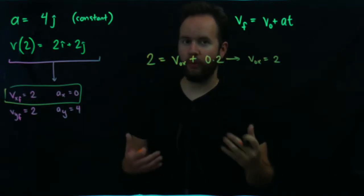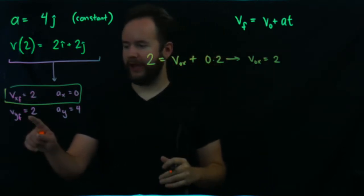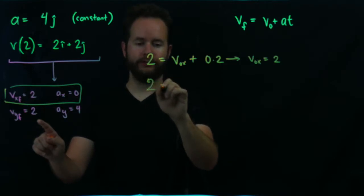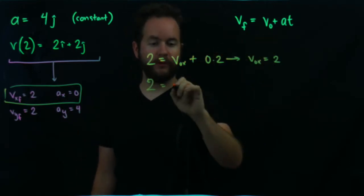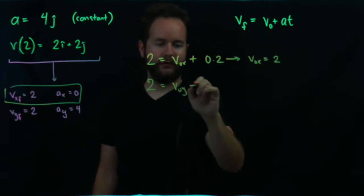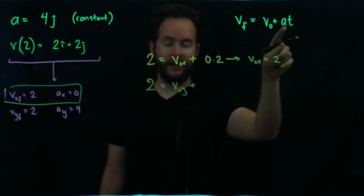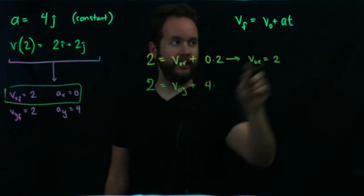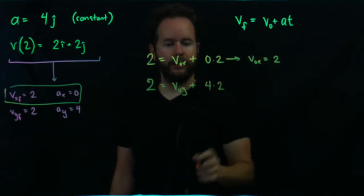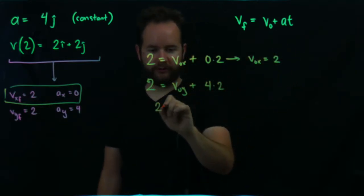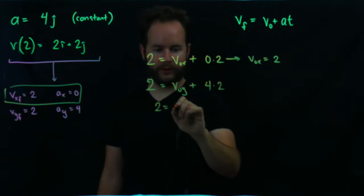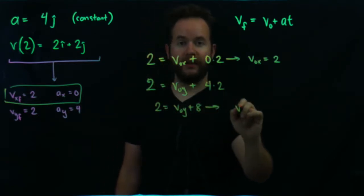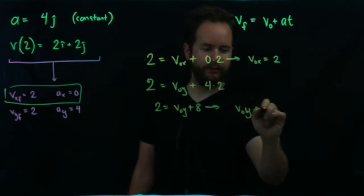Now we're going to do the same exact thing but for the y direction. The final velocity in the y direction is 2, and the initial velocity we don't know in the y direction. We say plus the constant acceleration, which is 4 in the y direction, and then we know time is 2. This allows us to solve this equation. I'm going to write this as 2 equals v naught y plus 8.